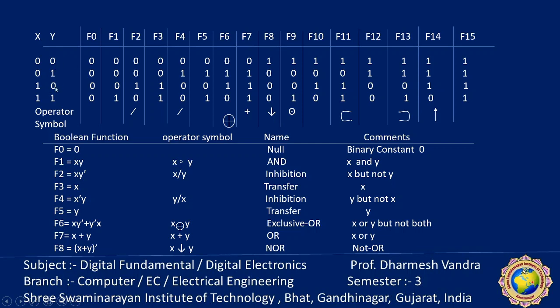F5 is the same as the y column — it transfers the value of y. It is like a y buffer.